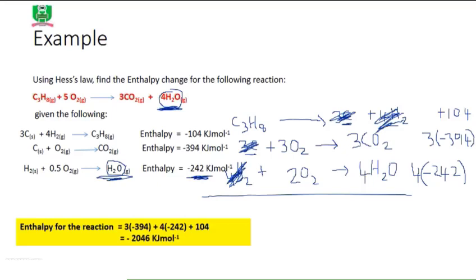Oxygen is not seen in equation number one, but it appears on the left in equation number two and also on the left in equation number three. Because it appears on the same side in both equations, it is not a spectator species and must not be eliminated. Carbon dioxide is only seen in equation two, and water is only found in equation three — neither appears on opposite sides, so neither is eliminated. All spectator species have now been identified and removed.